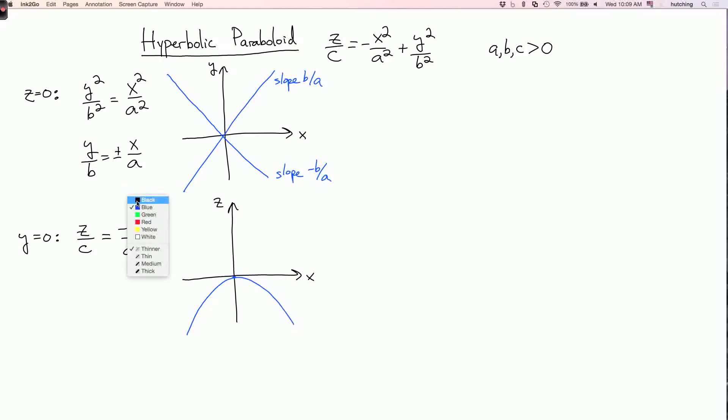I could likewise set x equals zero to find the intersection with the yz plane. And here we get the equation z/c = y²/b². So this is a right side up parabola.